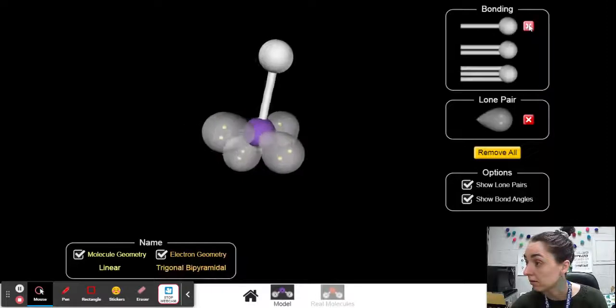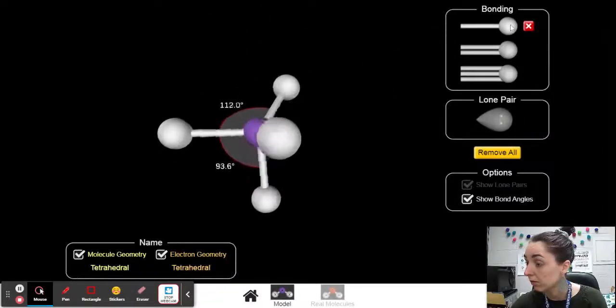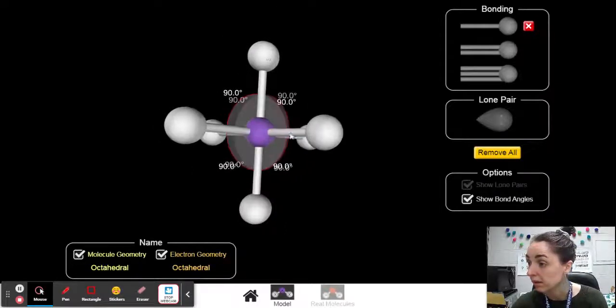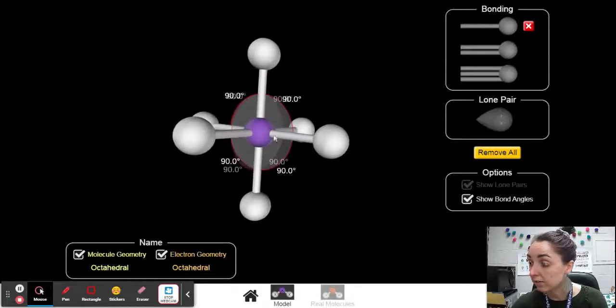Check this. So I'm going to do four, five, six. So octahedral, check the shape. Got this straight up and down, and I've got four around. They're all 90 degrees.